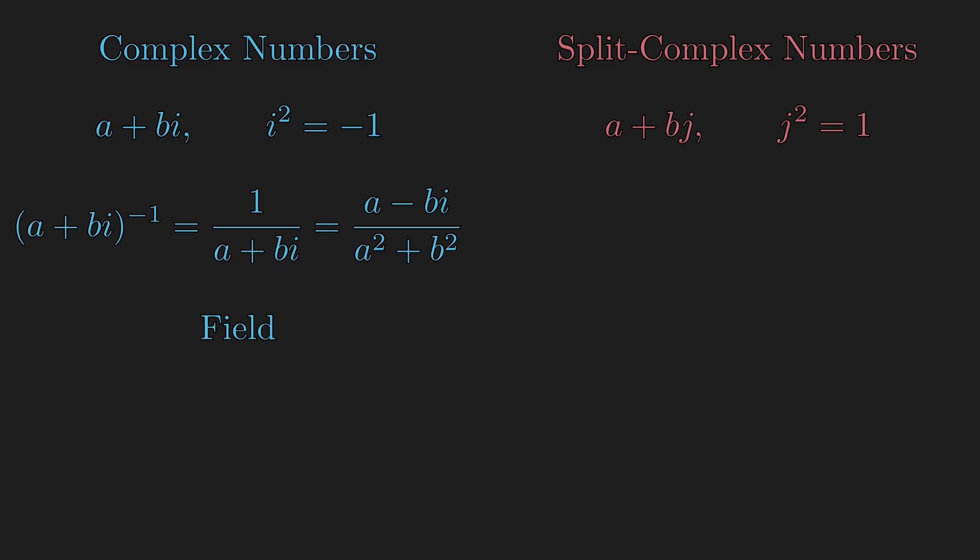Unlike the complex numbers, there are non-zero elements that cannot be inverted, namely elements that have the same absolute value for a and b, such as 3 plus 3j or 5 minus 5j. And they are the zero divisors of the ring.